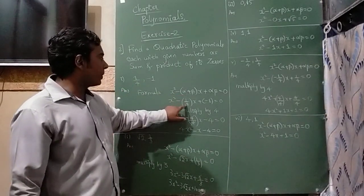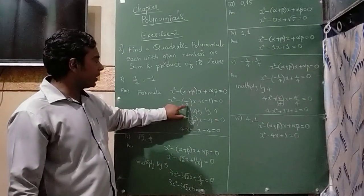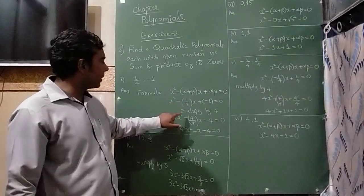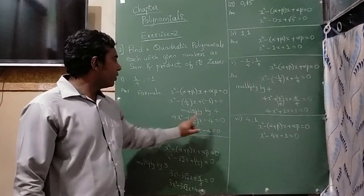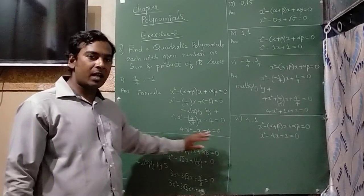So α+β, I will write it as 1/4, αβ I will write as -1. In the denominator you can see there is a number 4, so I will multiply the whole expression by 4. I will get 4x² - x - 4 = 0 as an answer.